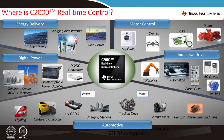Where are the places where C2000 is used in real-time control? The C2000 devices are used in multiple end applications. They play a critical role in energy delivery, primarily in charging infrastructure, solar and wind power. They play a critical role in digital power, primarily in telecom server, AC-DC rectifiers, uninterruptible power supplies, and DC-DC converters. There are also applications spanning motor control, like appliances, drones, e-bikes, and industrial drives like automation and robotics.